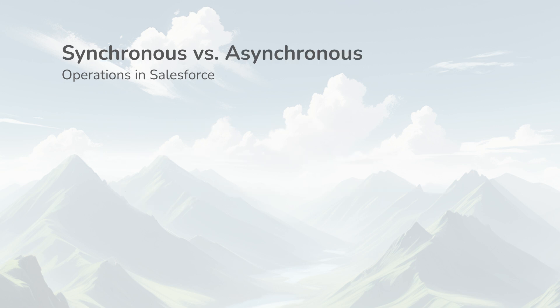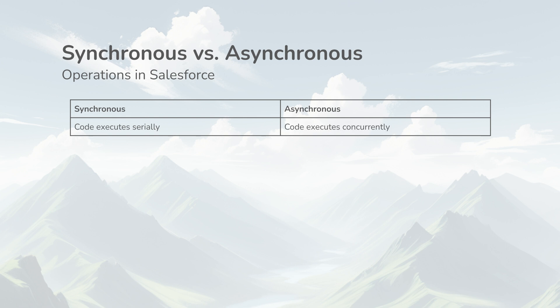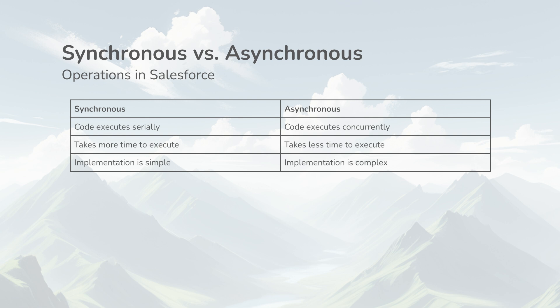Both approaches have their own advantages and disadvantages. In synchronous Apex, the code gets executed serially, while in asynchronous, the code gets executed concurrently. This is the reason synchronous execution takes more time than the asynchronous one. By default, the methods we create and execute in Apex are synchronous. However, for asynchronous Apex, there are multiple ways to implement solutions, which need more attention in terms of how they get initiated, how they complete their execution, and how they throw and handle exceptions.